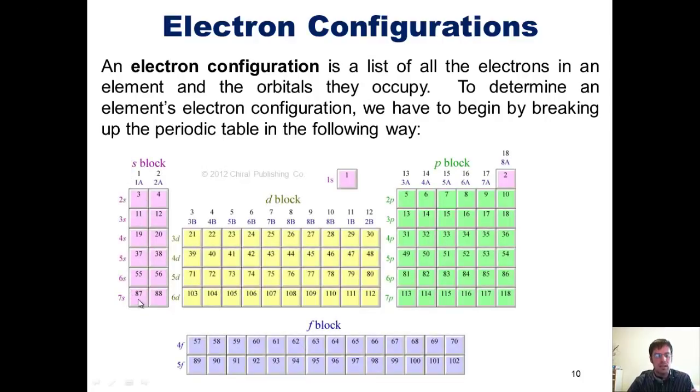All of the elements in columns 1 and 2 are called the s-block, which also includes hydrogen and helium. When talking about electron configurations, we consider hydrogen and helium part of the s-block. Elements in this green area of the periodic table are called the p-block. The transition metals constitute the d-block, and this region of lanthanides and actinides are called the f-block.